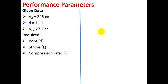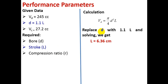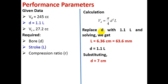Given data and required data are consolidated. VD equals π/4 times D-squared times L. Replacing D with 1.1L and solving, we get L equal to 6.36 centimeters, or 63.6 mm. Then D equals 1.1 times L gives D equal to 7 centimeters, or 70 mm. For compression ratio r, using r equals (VD plus VC) divided by VC, substituting all values gives r equal to 10.